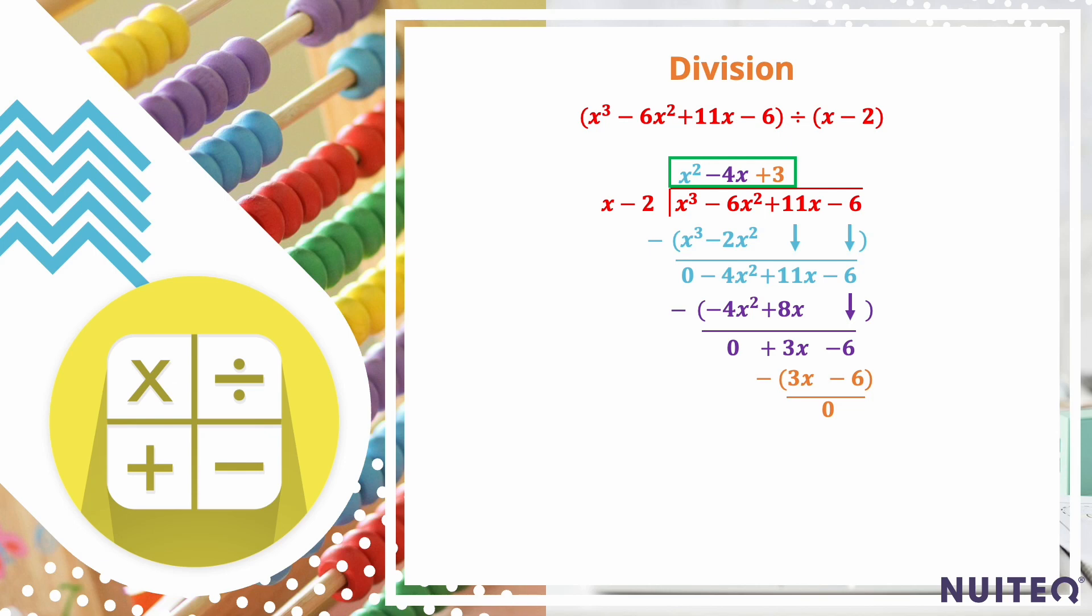So, (x³ - 6x² + 11x - 6) ÷ (x - 2) = x² - 4x + 3.